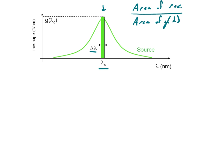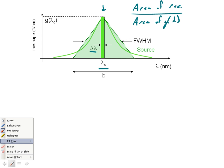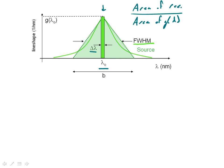The line shape function g of lambda looks like a complicated Gaussian function. For a first approximation, rather than doing the exact integral, we simply approximate it by a triangle of equal area. This triangle has a base B equal to the full width at half maximum. We can remove the g of lambda curve to more clearly see the full width at half maximum of the triangle.